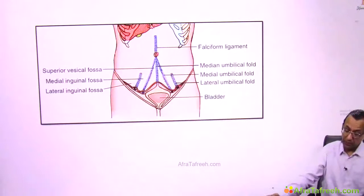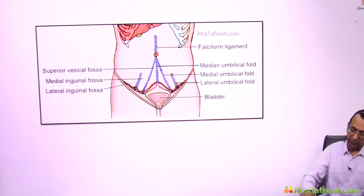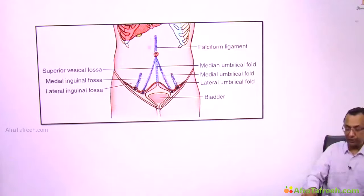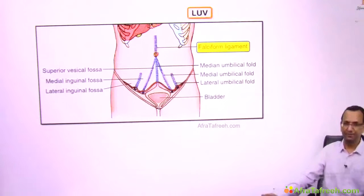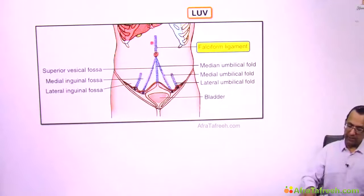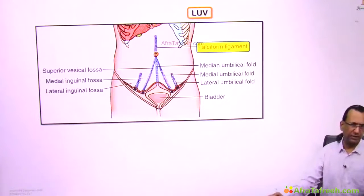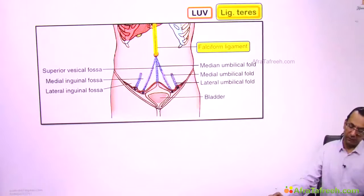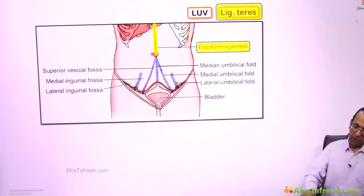On the anterior abdominal wall there is the falciform ligament — a double fold of peritoneum coming from the umbilicus and going towards the liver, carrying the left umbilical vein to the liver. In the adult, the left umbilical vein becomes the ligamentum teres, and the falciform ligament still carries the ligamentum teres to the liver.